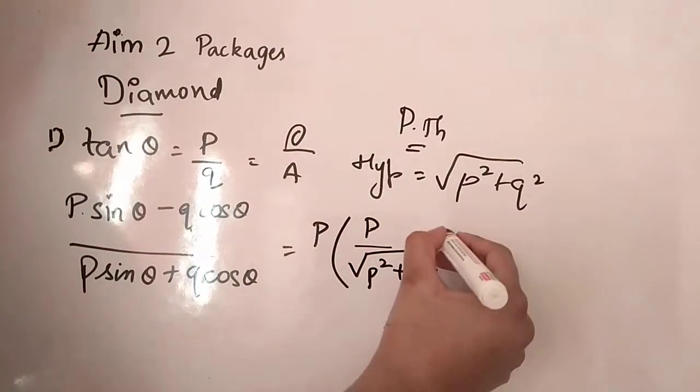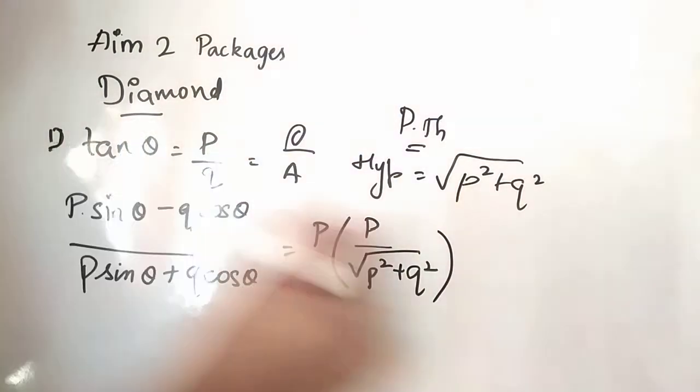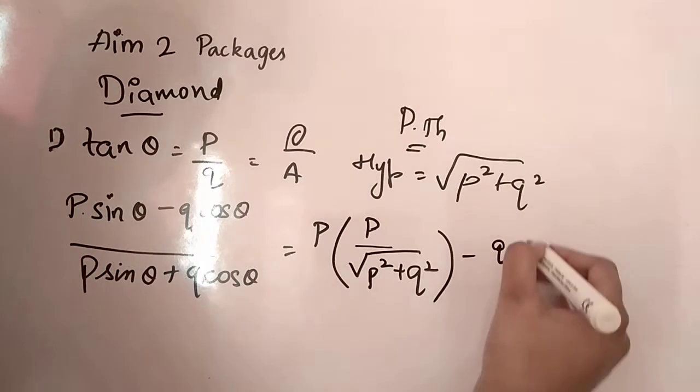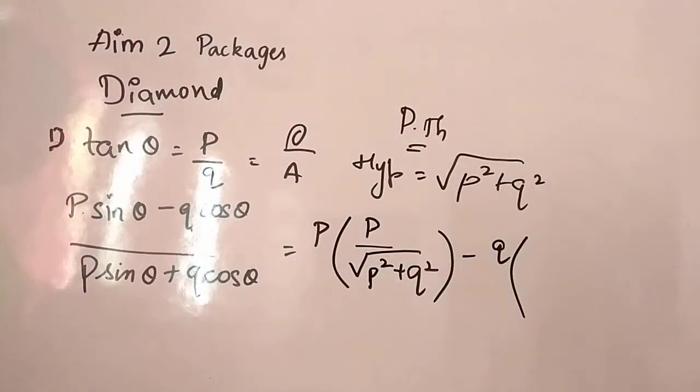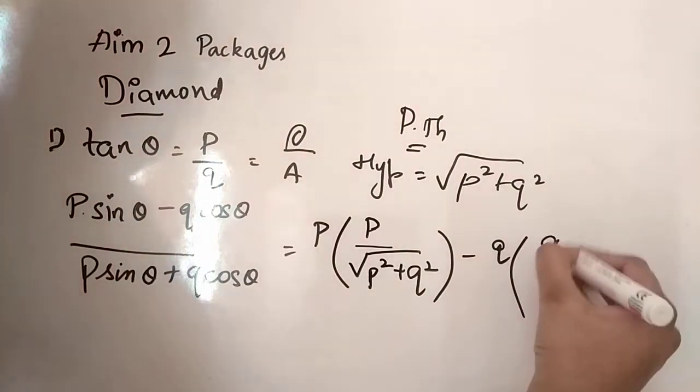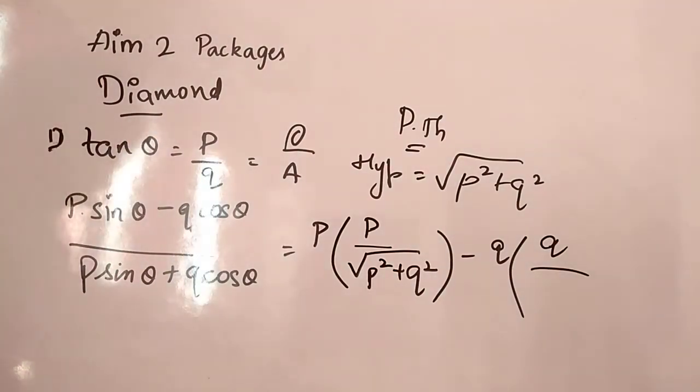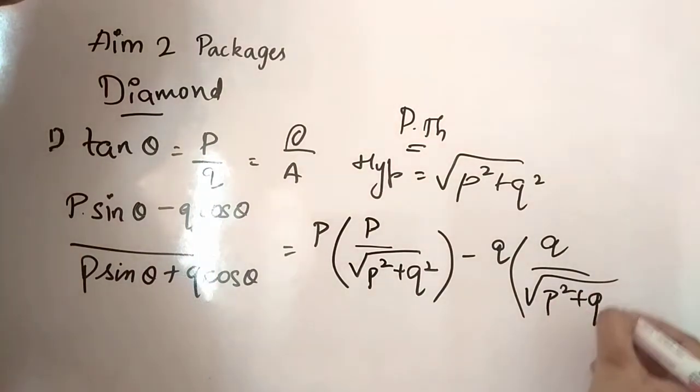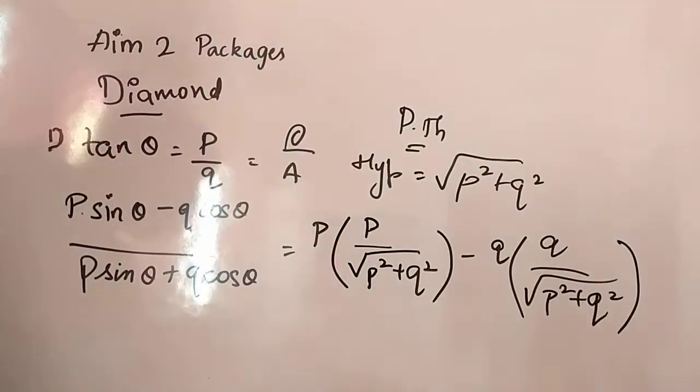Then into over, this full term we have written now, minus Q into, now what we can multiply with this? Cos theta. So cos theta is nothing but, it is adjacent by hypotenuse. So it is Q by square root of P square plus Q square. Right?